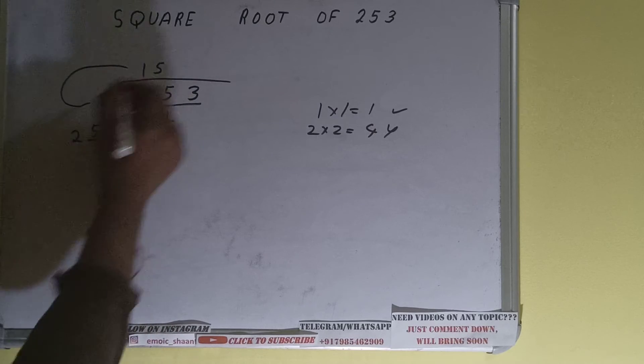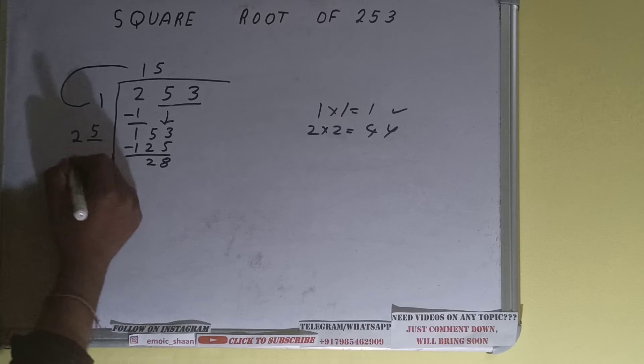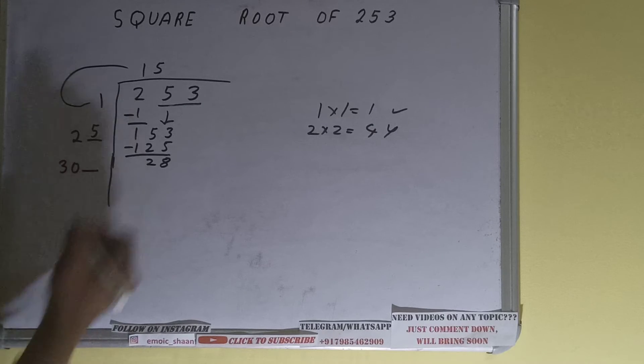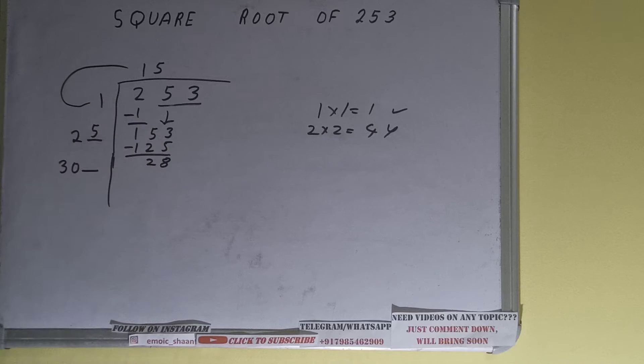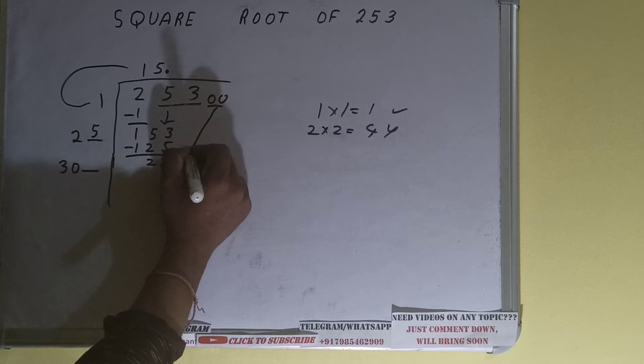Now 25 into 5 we did, so add both. 25 plus 5 will be 30. Write it over here and keep one digit extra over here. We need to make this number big so that we can divide, but you can see we don't have any more pairs present over here that can be brought down. So what we'll do is we'll put decimal. Once we put decimal we can bring down pairs of zeros and number will become as 2800.